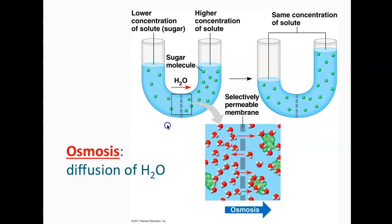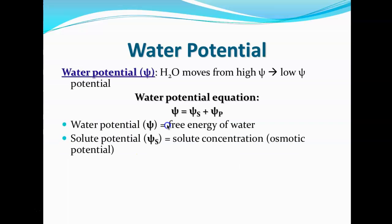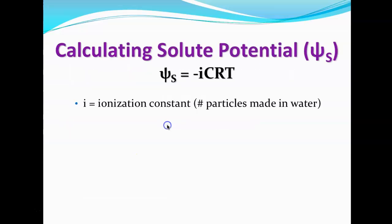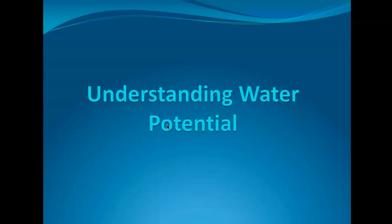Osmosis is the movement of water. Facilitated diffusion doesn't require any energy — it's the movement of a substance from high to low concentration across the cell membrane with the help of a protein, like a membrane protein. An ion channel would be an example of that; an aquaporin would also be an example.